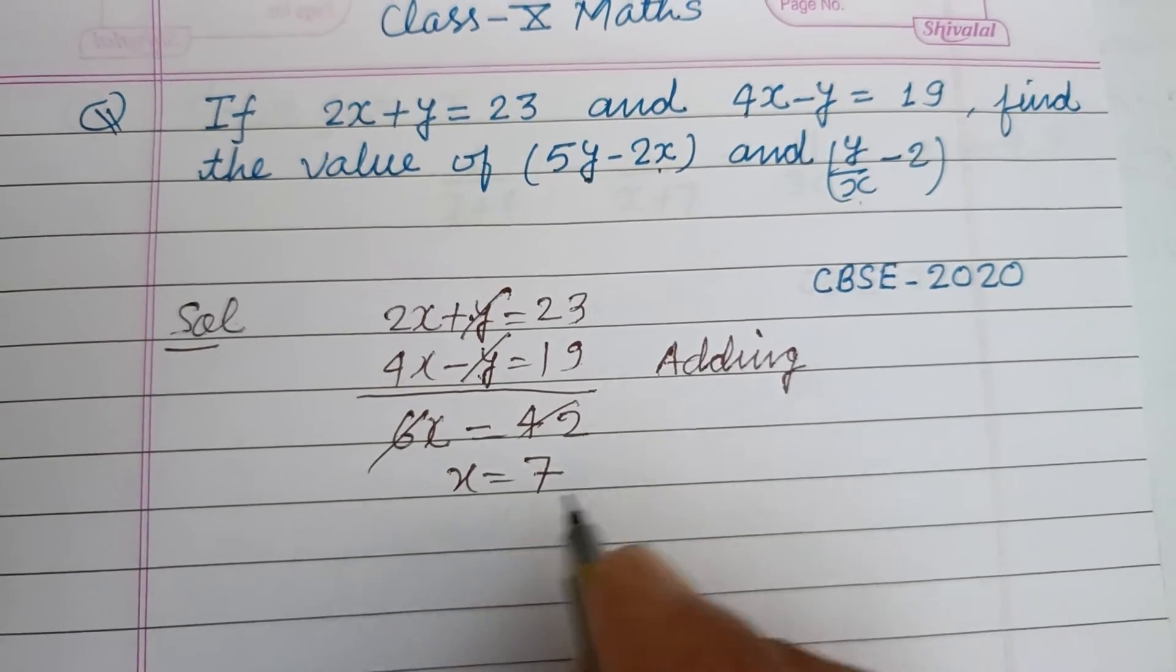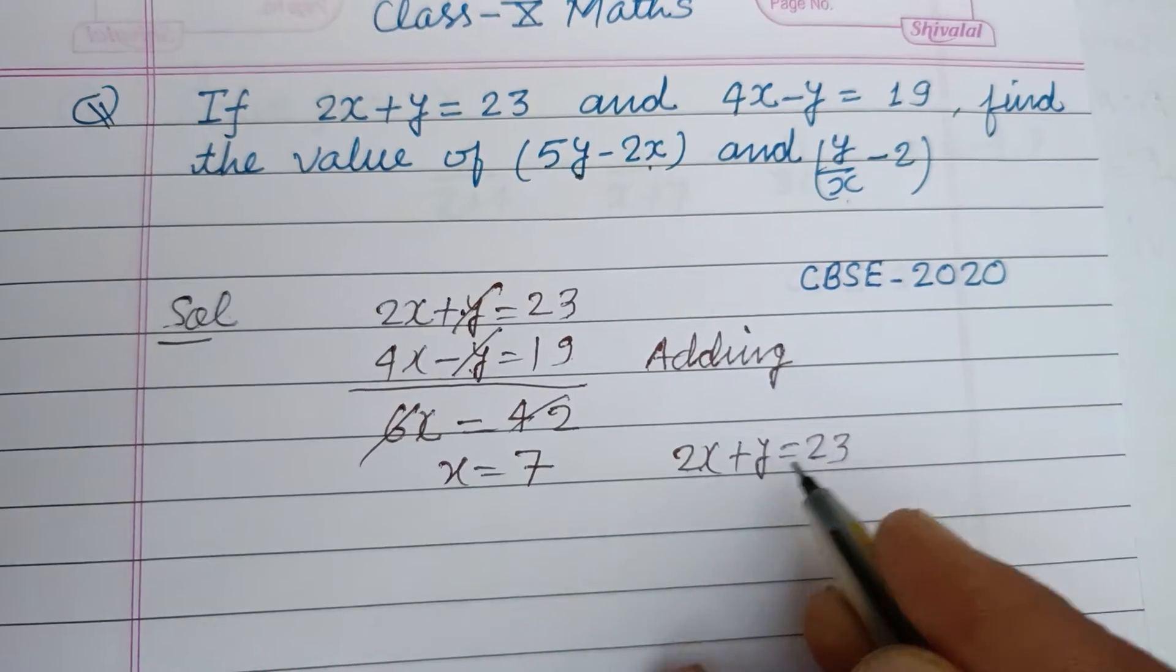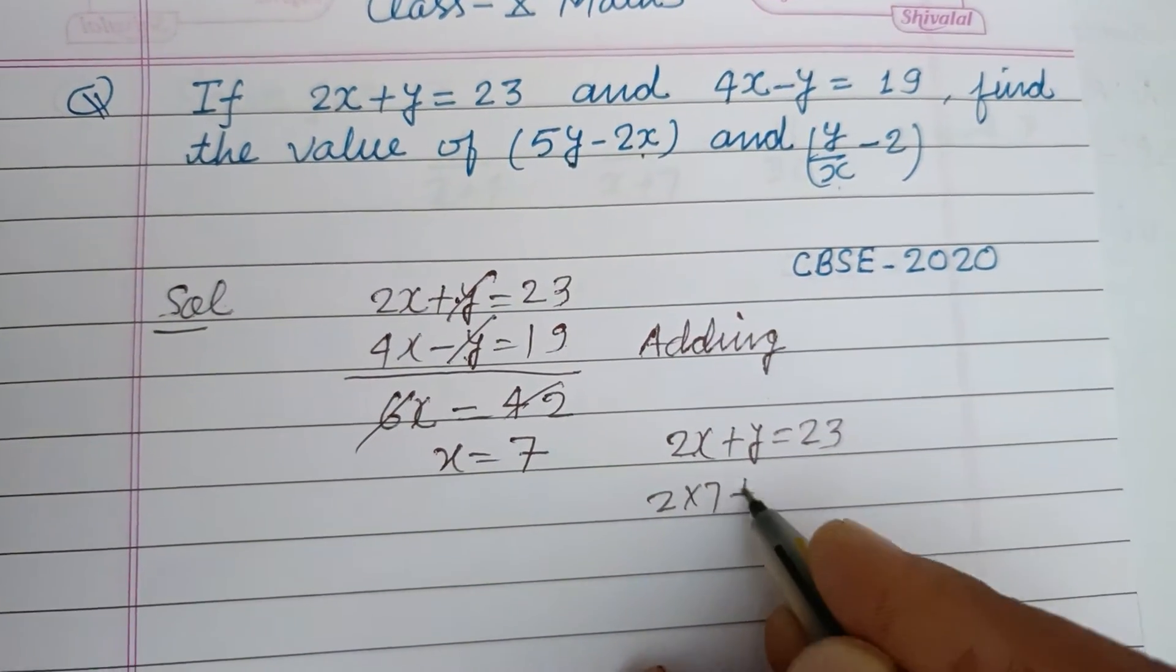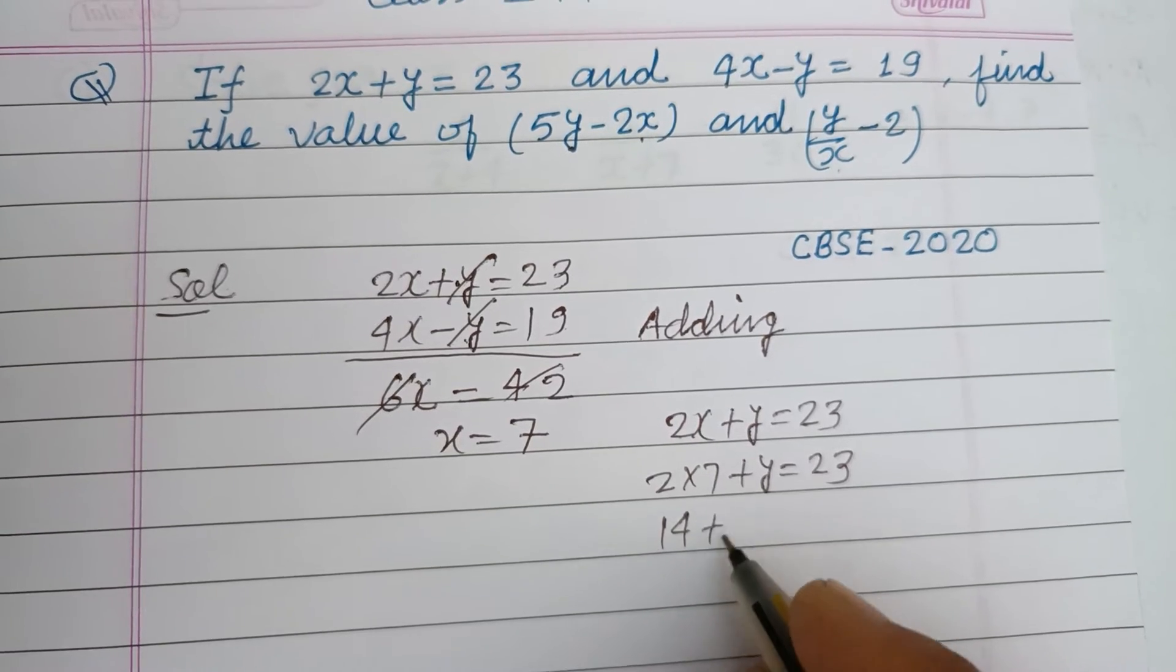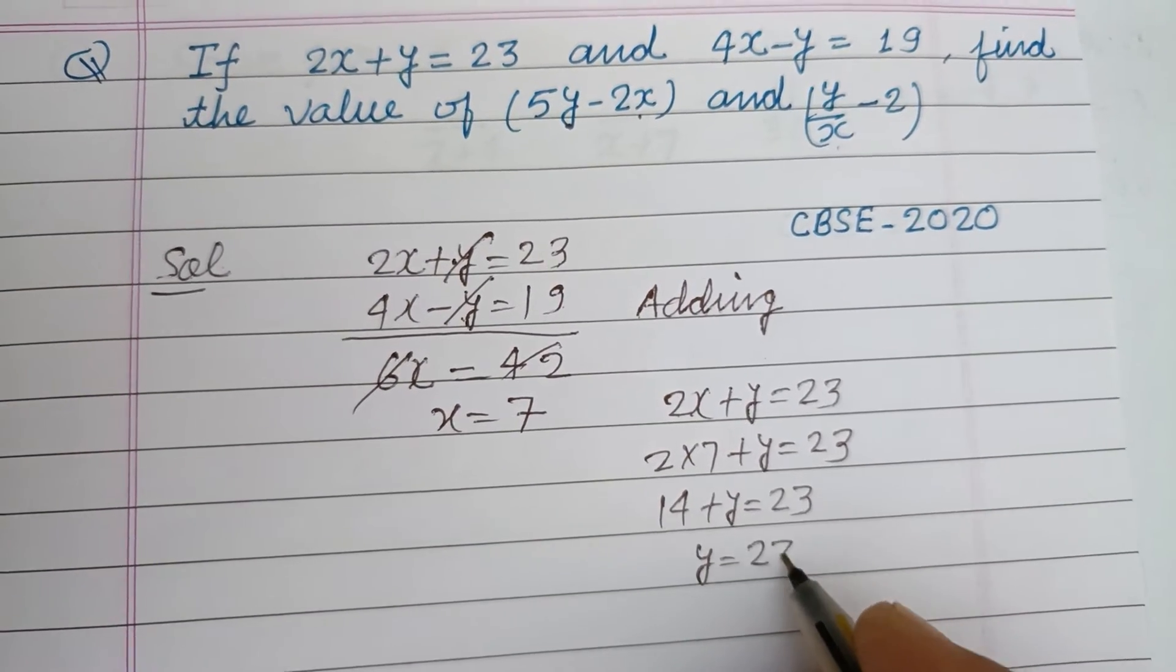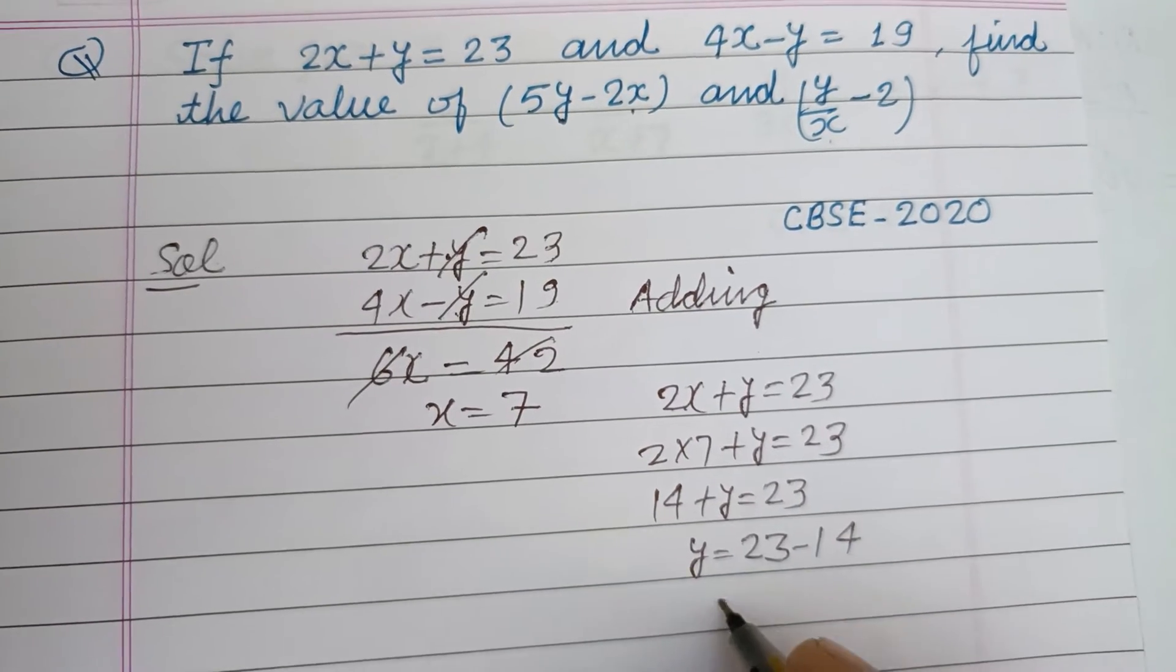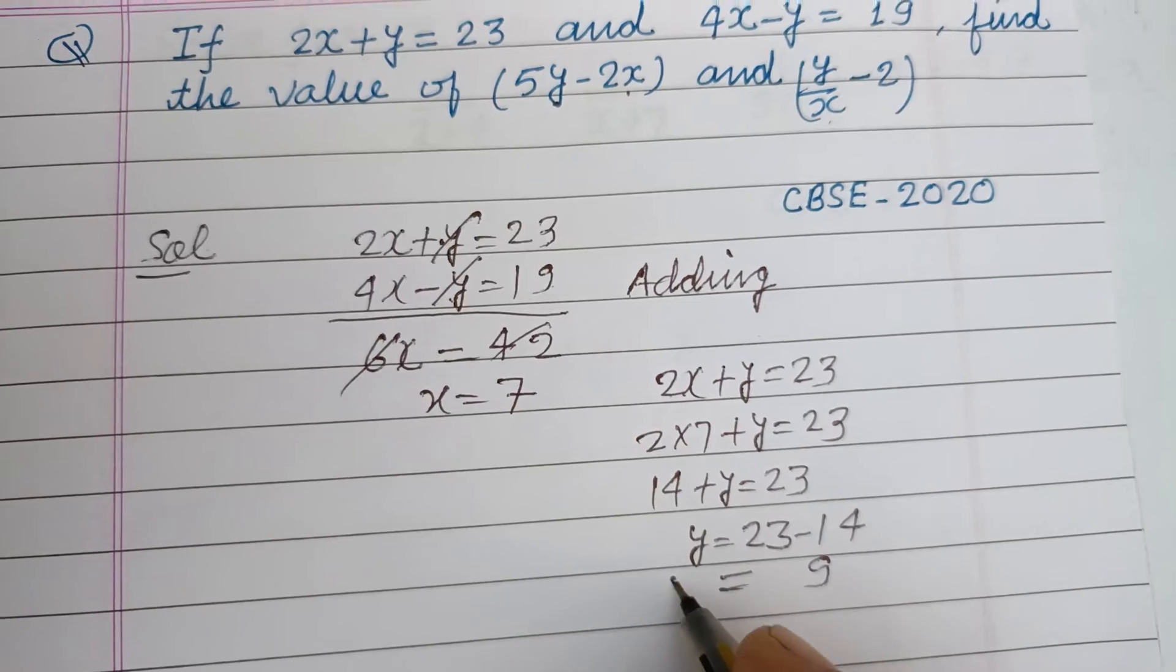Putting this value in the first equation: 2x + y = 23, so 2 times 7 plus y equals 23. 14 + y = 23, therefore y = 23 - 14 = 9. So y = 9.